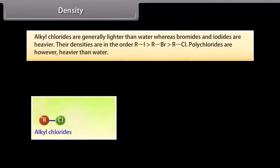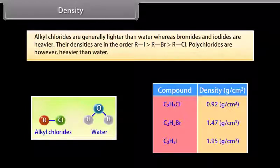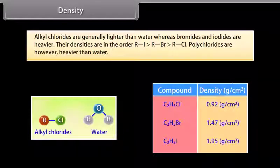Alkyl chlorides are generally lighter than water, whereas bromides and iodides are heavier. The densities are in the order: RI > RBr > RCl. Polychlorides are, however, heavier than water.